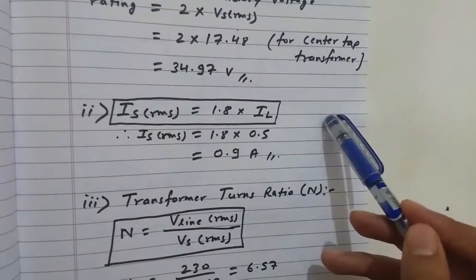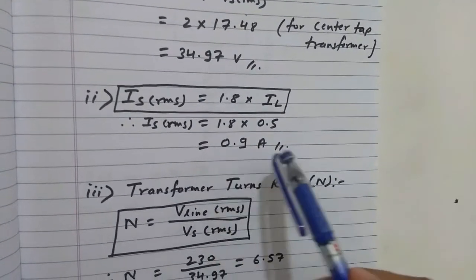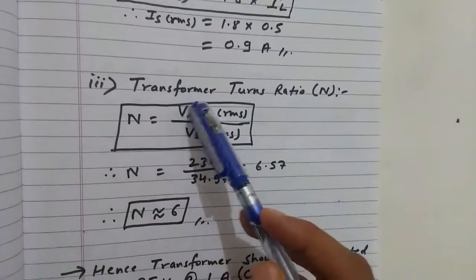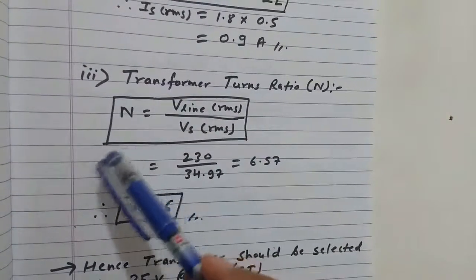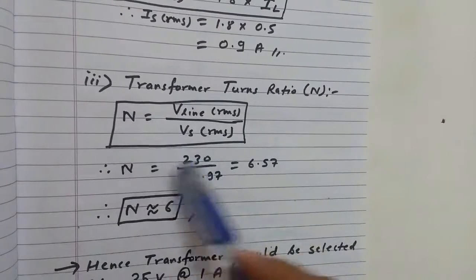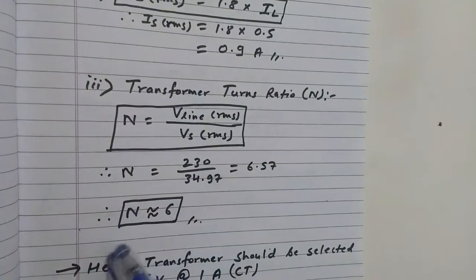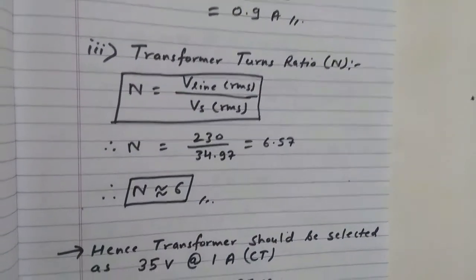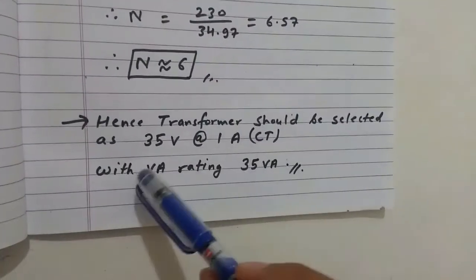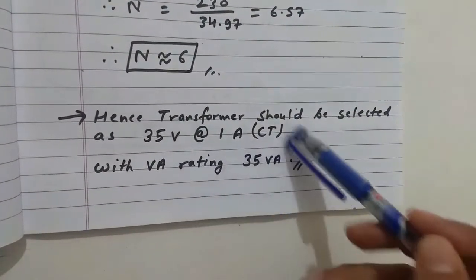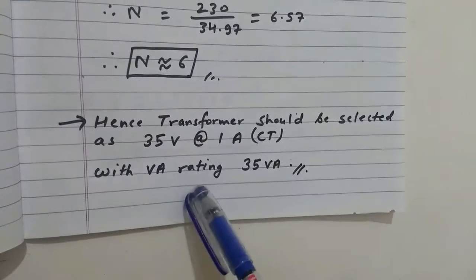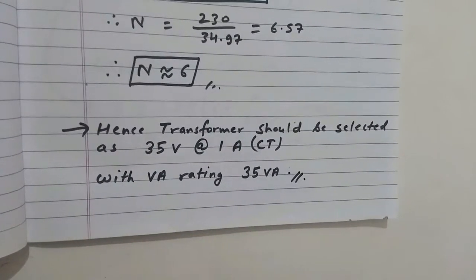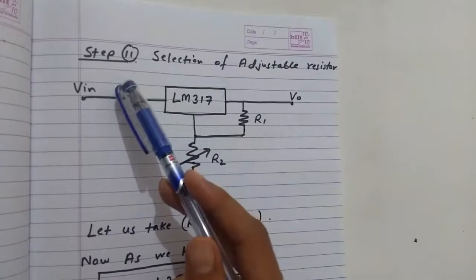The transformer turns ratio N = V_primary / V_secondary gives a turns ratio of 6. Hence we select a center-tap transformer rated 35 V at 1 A with a VA rating of 35 VA.